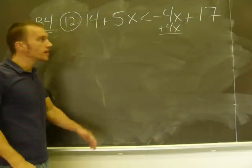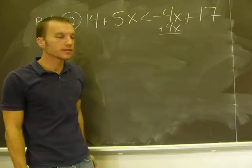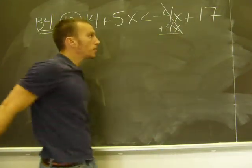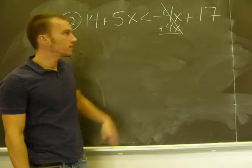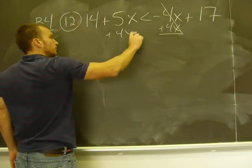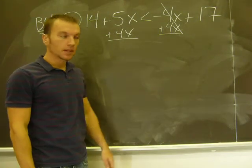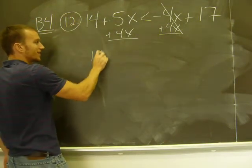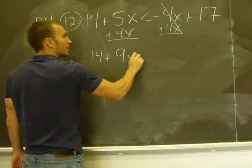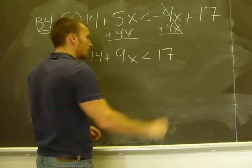How does that get rid of it? Well, negative 4x plus 4x is 0, so it's gone. But remember, if I add something to that side, I've got to do the same to this side. So I add 4x to the left side. Rewriting the inequality: 14 plus 9x is less than 17.